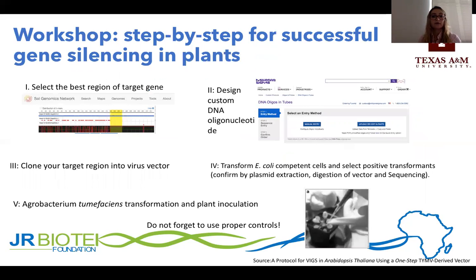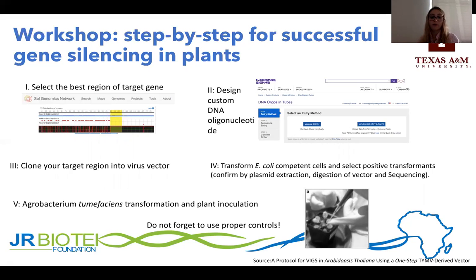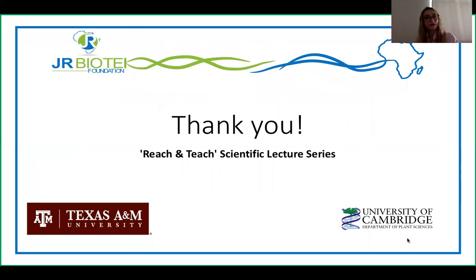During our workshop, I will guide you on how to select the best region of your target gene to be silenced, how to design and customize primers for amplifying the gene and constructing your virus vector clone, and how to proceed with E. coli competent cell transformation and selection of positive transformants for plant inoculation. I will also cover the important controls you cannot forget for your experiment. If you're interested, you can attend our workshop on November 13th. Thank you very much for your attention, and feel free to contact me if you have any questions.